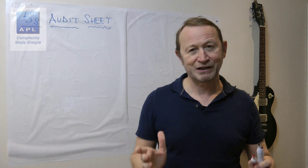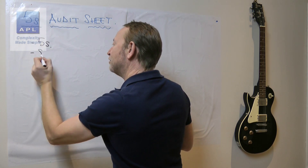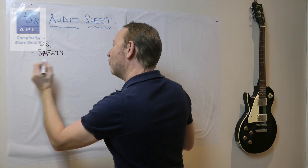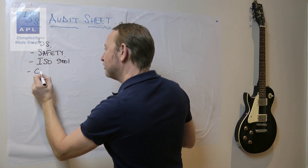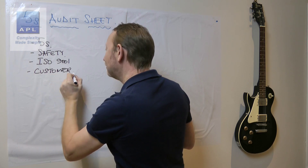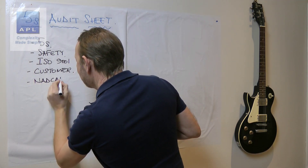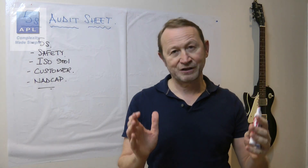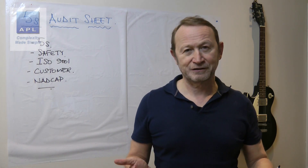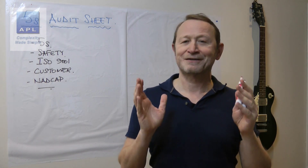I've entitled this video 'Can We Stop the Audit Madness.' Here's the point: you do audits — you do a 5S audit, you might do a safety audit, you do an ISO 9000 audit, you do a customer audit. If you're into that kind of thing, you might be NADCAP certified and do a NADCAP audit. You can add your own item to that list, and you do them all individually.